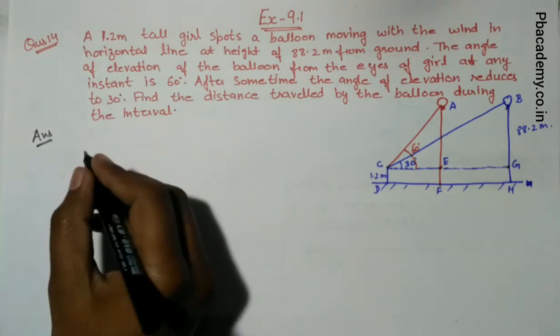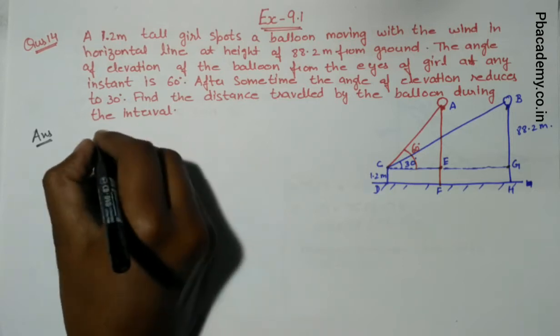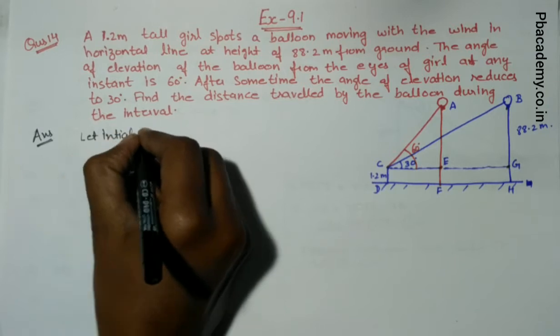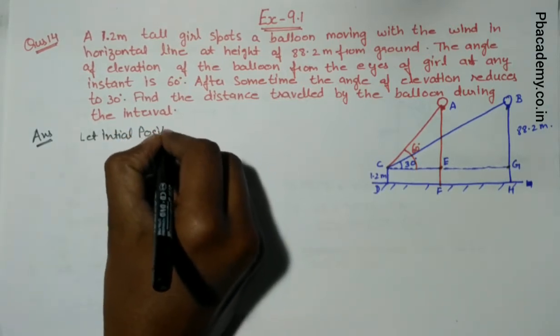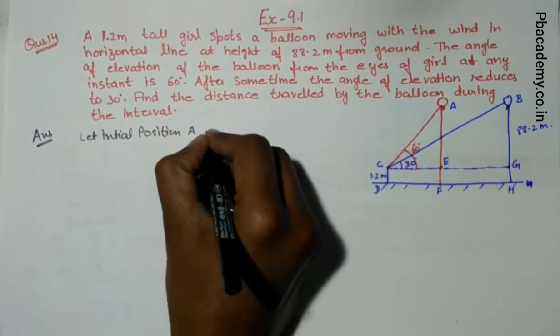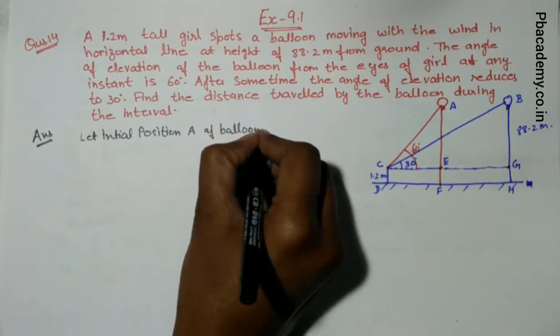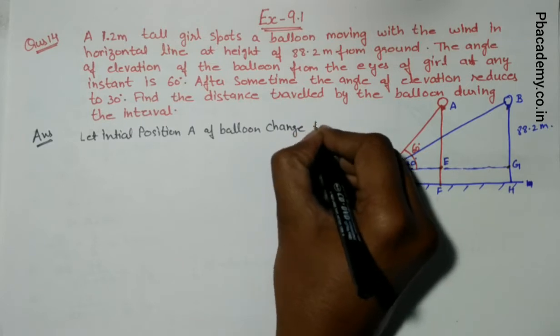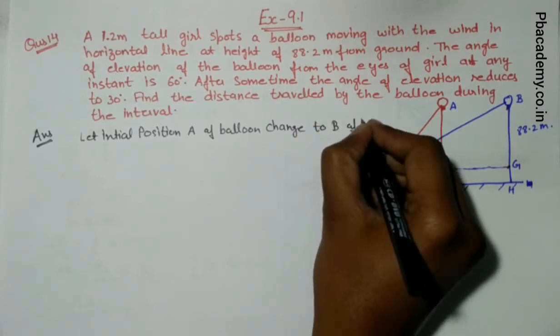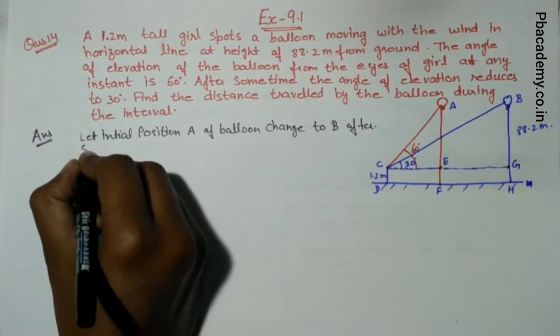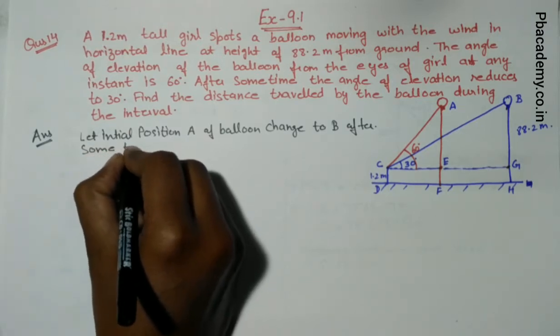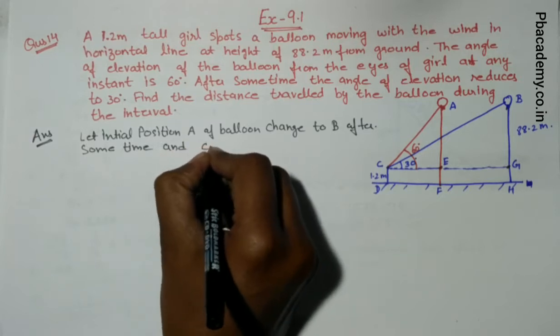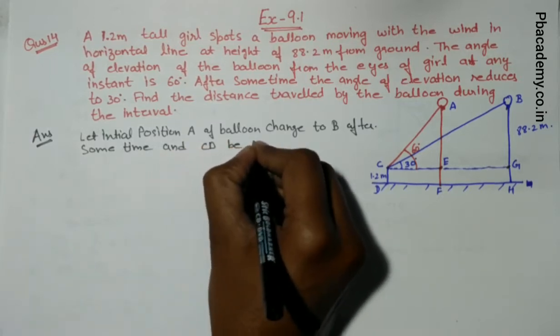Now first of all, let us define the figure. Let initial position A of balloon change to B after some time, and CD be the girl.